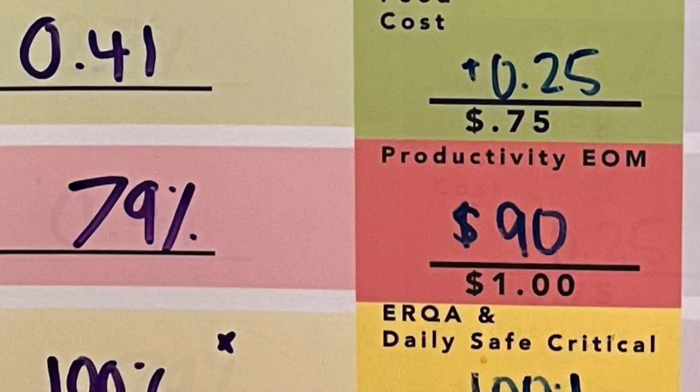Productivity — you've probably heard us talk about this a time or two. Productivity is sales divided by labor hours. What this means is having the appropriate amount of team members on shift so that the sales coming in are profitable. This is a combination of scheduling smartly and shift leads cutting when necessary.